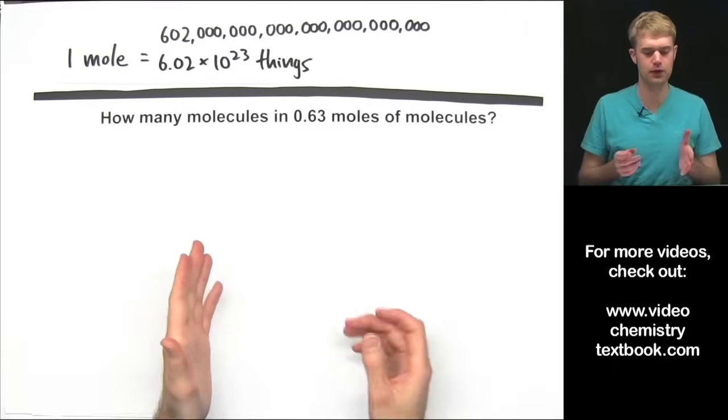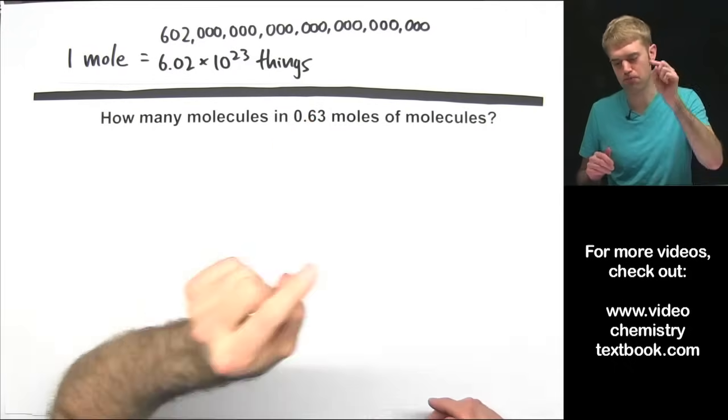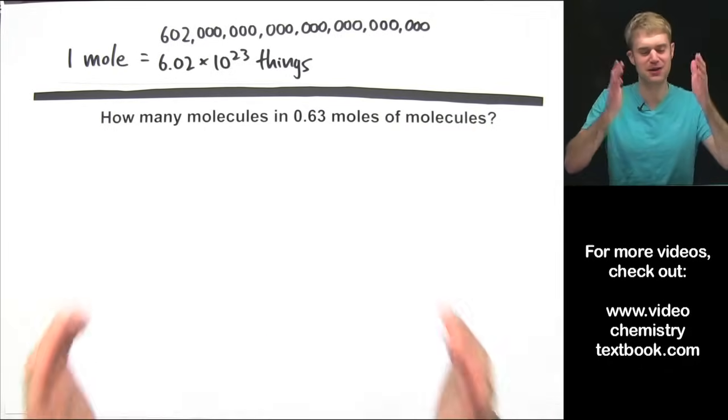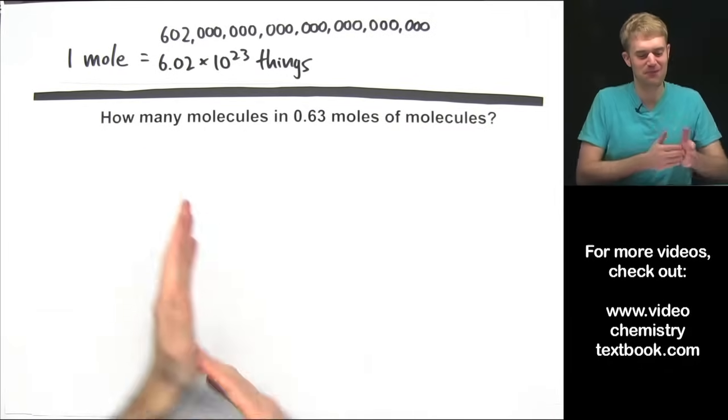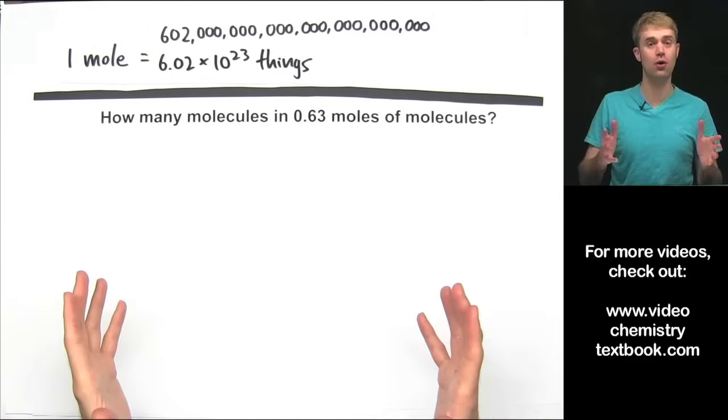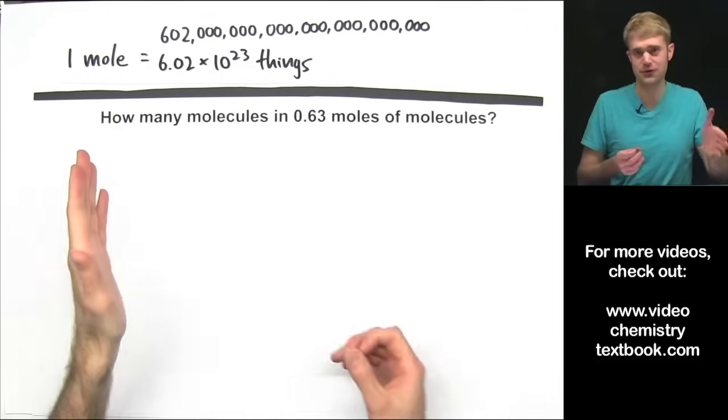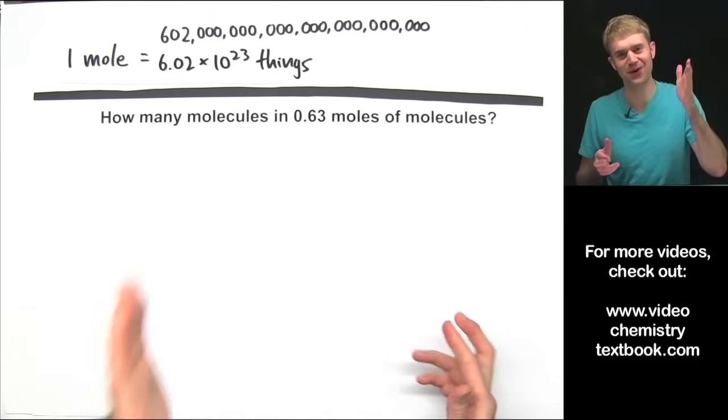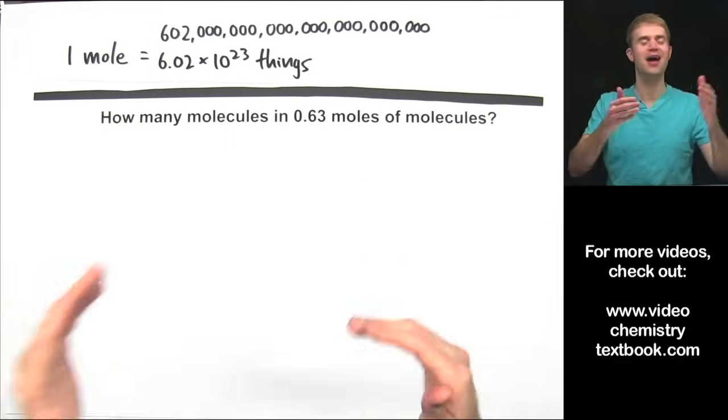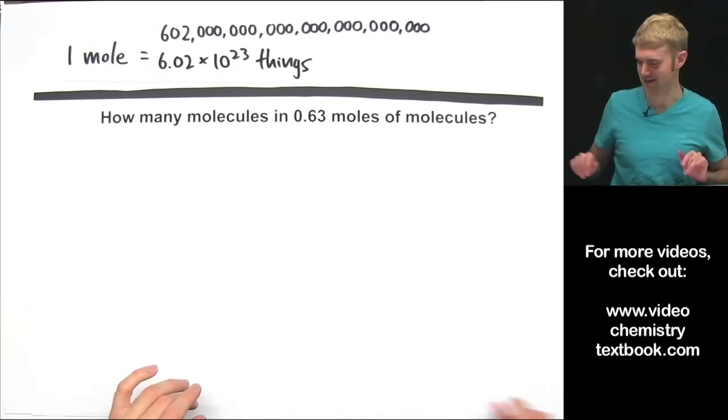How many molecules in 0.63 moles of molecules? Now we're talking about molecules here. Before we were talking about atoms but it doesn't matter what we're talking about because there are always 602 hexillion things in a mole. So if we've got a mole of molecules, a mole of jelly beans, a mole of coins, a mole of atoms, they've all got 602 hexillion things and the process that we go through is exactly the same.